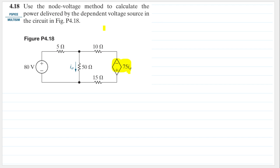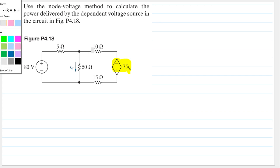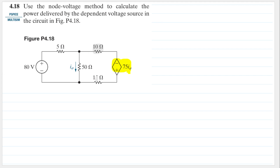Now let's see what we can do. I immediately see that this 10 ohm and 15 ohm resistor are in series — this one, this one, and this one are in series — so we can just add up the resistors. We will have 10 plus 15, which gives us 25 ohms.